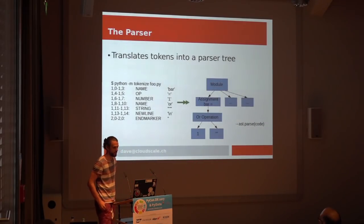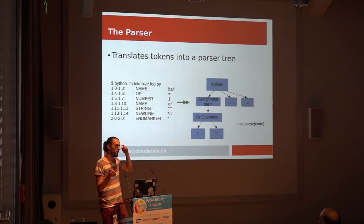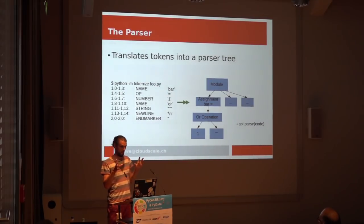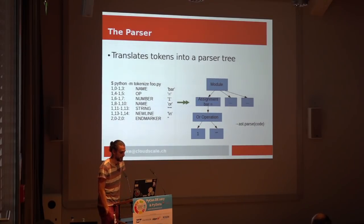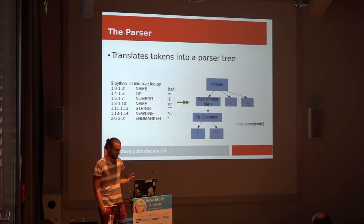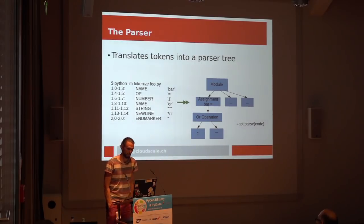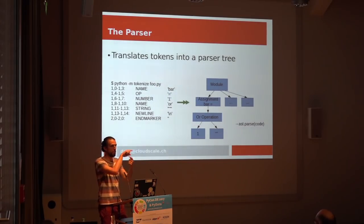Let's continue with the parser. That's usually where most strange things happen in a language, because you have this grammar file in Python. Python has a very nice and readable grammar file, actually. For C++ this would be way worse, or you couldn't even generate a grammar file. I would argue that reading the Python grammar file — it's like this long — is a very good use of your time. It basically tells you which things have precedence over others.